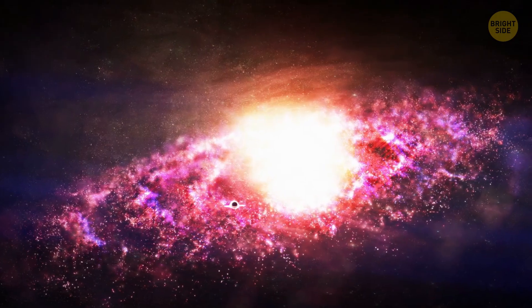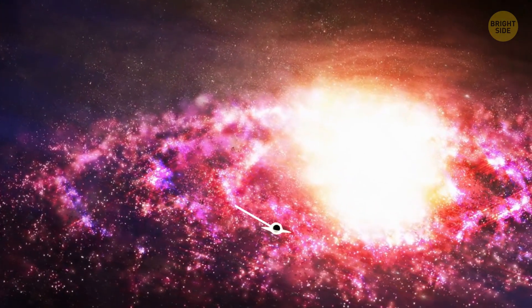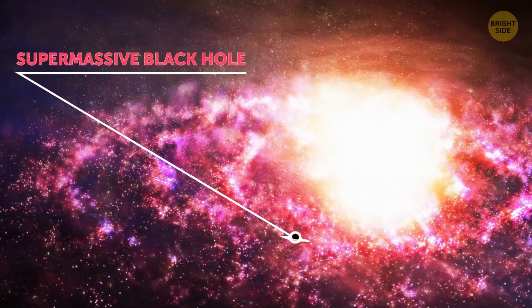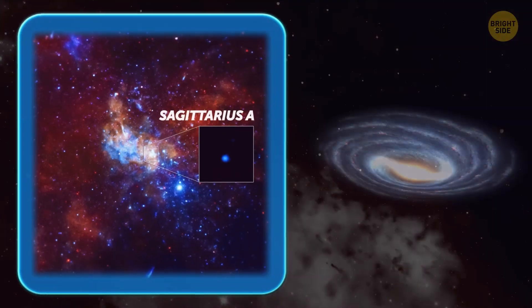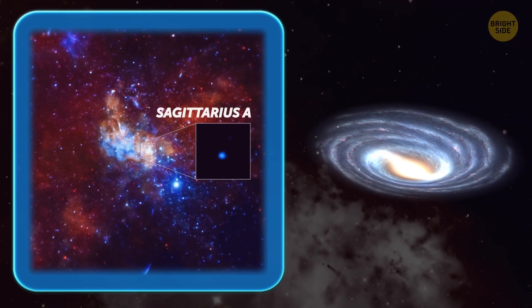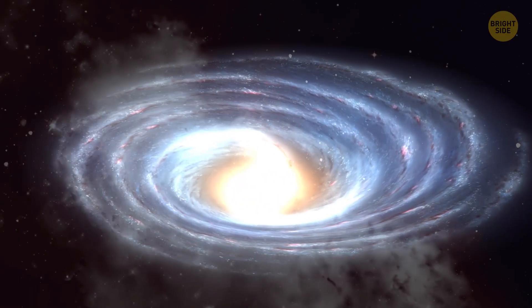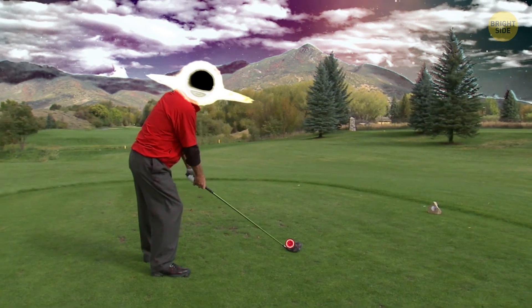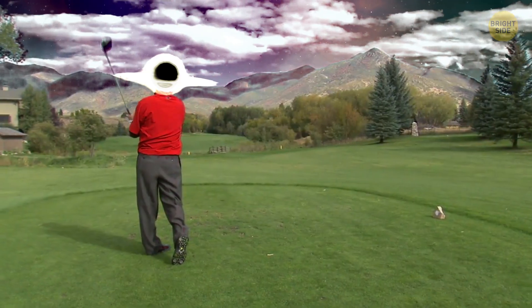Supermassive might be the more accurate term, since astronomers have determined that, based on the star's trajectory, it was sent flying by none other than the supermassive black hole at the center of our galaxy. Known to astronomers as Sagittarius A, this enormous collapsed star is what gives the Milky Way its shape. It's also the only object with a strong enough gravitational field to play the driver to our favorite cosmic golf ball.